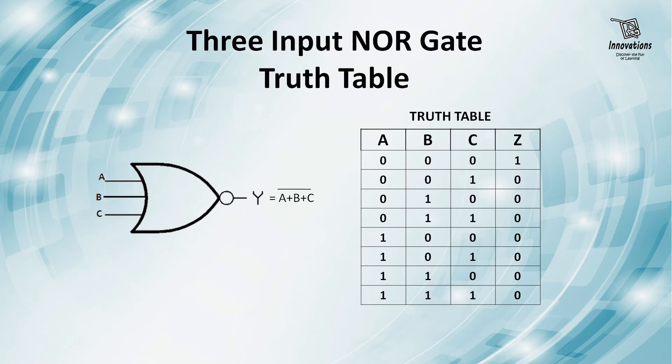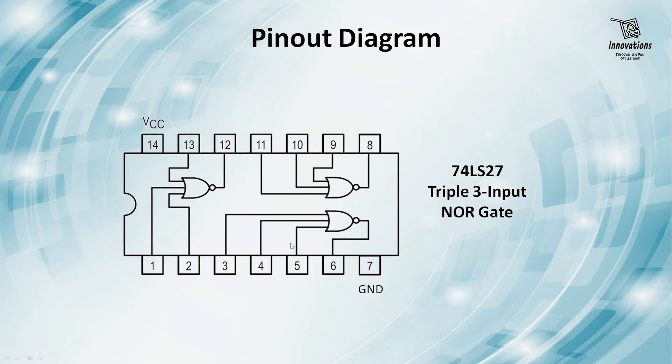Now let us have a look at the pinout diagram of the IC 7427. This is the diagram of a 7427 IC. It has three triple-input NOR gates. NOR gate number 1 is input pins 1, 2 and 13, output is pin number 12. NOR gate 2 is input 3, 4, 5 and output 6.